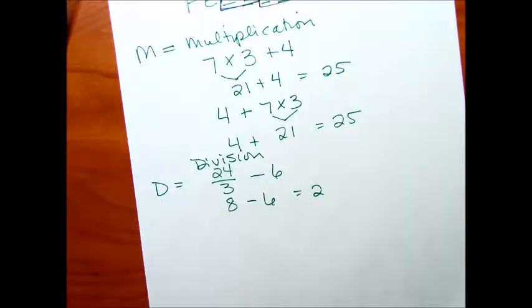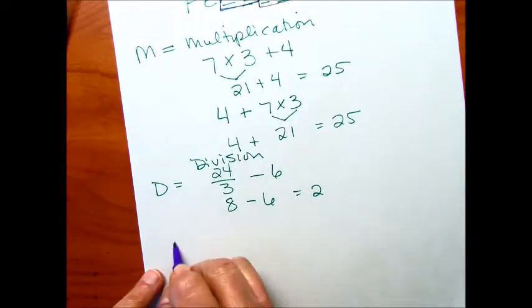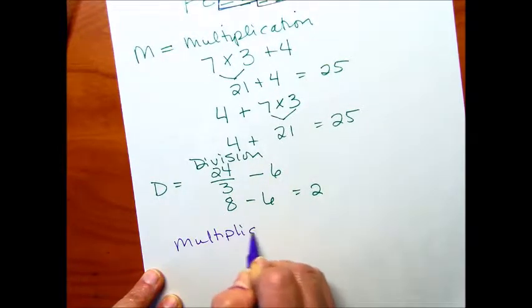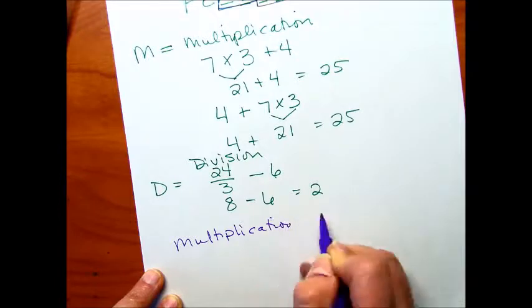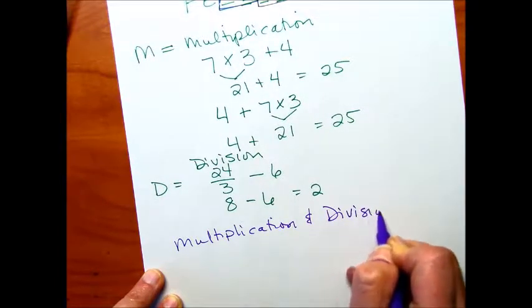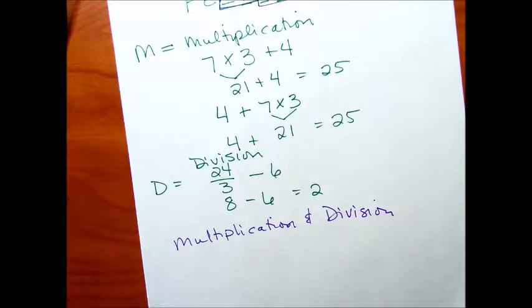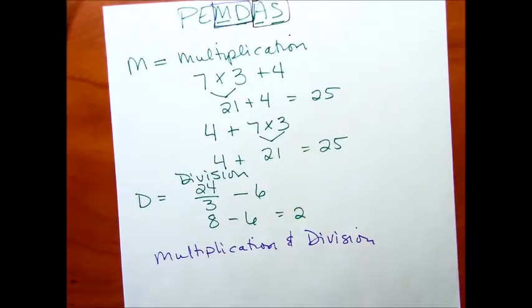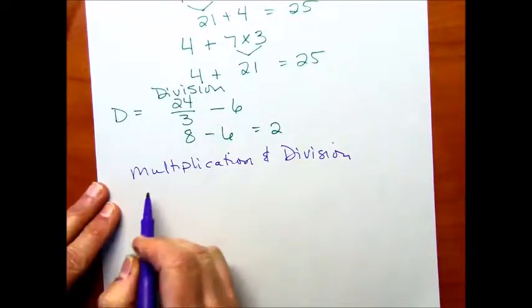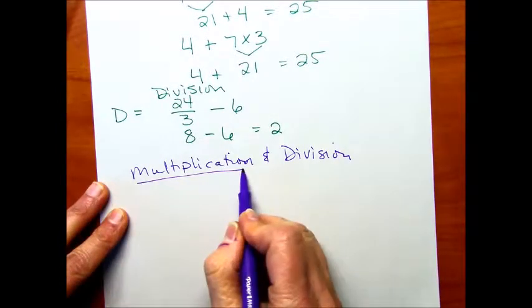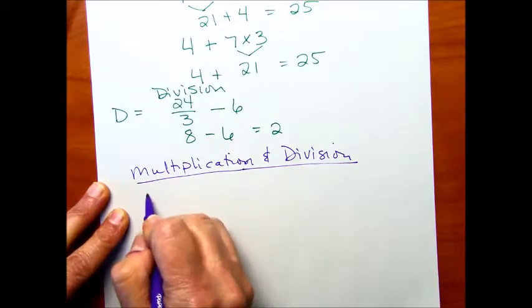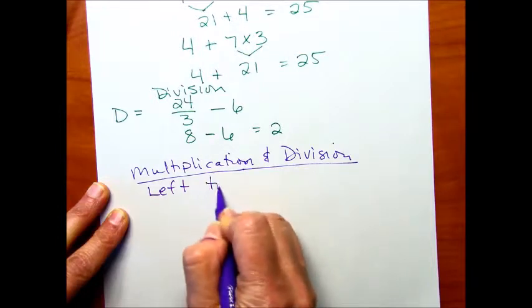Now, there is a special rule with multiplication and division. The rule is that when you have multiplication and division in your expression, you're going to solve left to right.